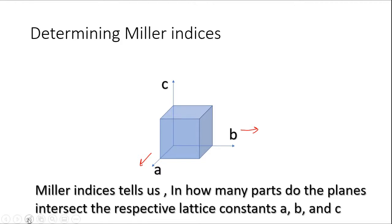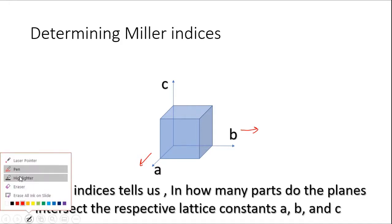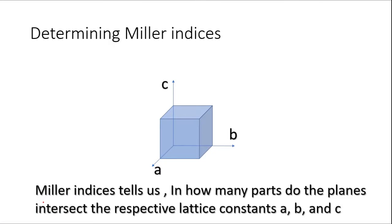Crystallographic direction unki direction lattice vector a, b, c ke along hoti hai. Ye wali edge length aapke paas a hai, ye wali edge length b hai, aur ye third direction c axis ke along hai. Aapko ye bhi pata hai ki a, b, c ke beech mein angle necessarily 90 degree ka nahi hota. Crystallographic mein aapke paas jo unit cell hai, usmein a, b, c ke jo beech mein angles hote hain, wo ninety degree se differ kar sakti hain, aur unit length a, b, c bhi ek doosre se different ho sakti hai.